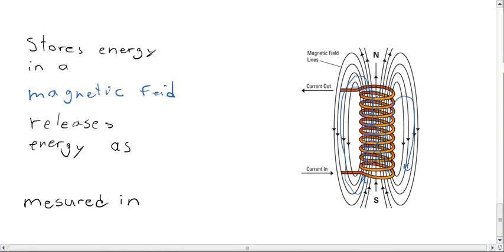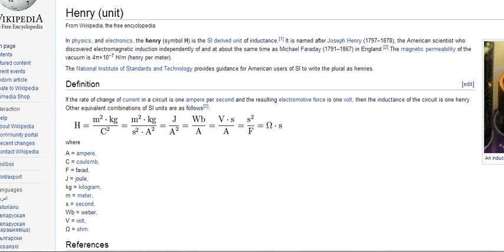And it releases energy as electricity. Much like an electrical generator which moves a magnet around a coil, you know, that moving magnetic field creates energy. The units for these are Henrys. Henrys, I don't know if that needs two Ns in it. Yeah, Henry.